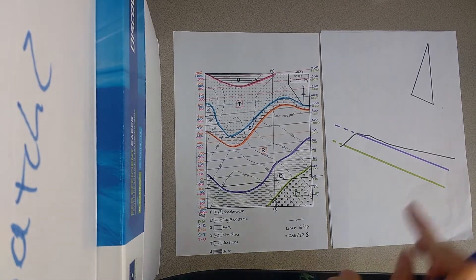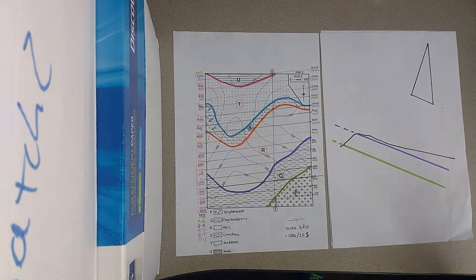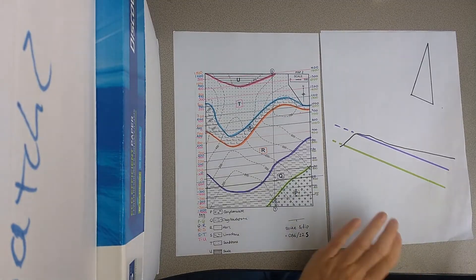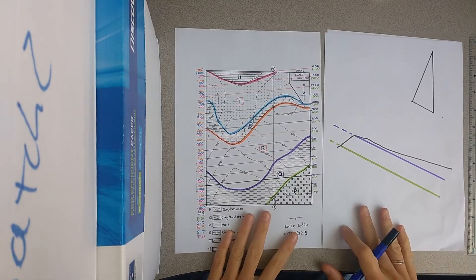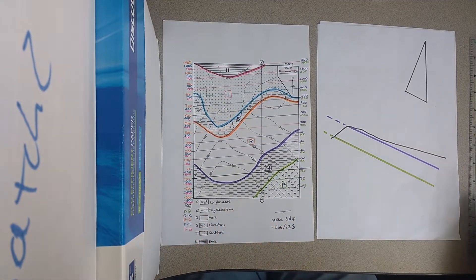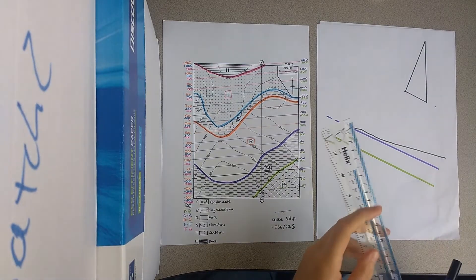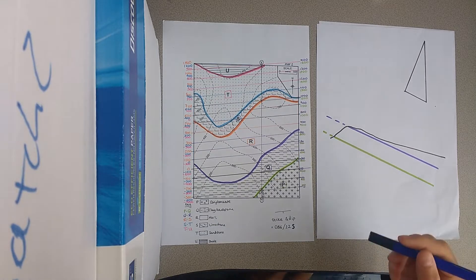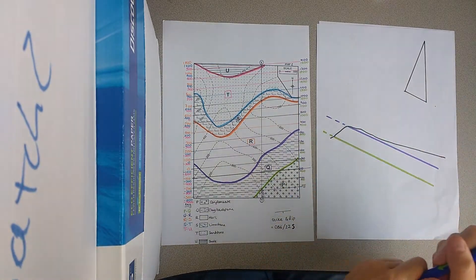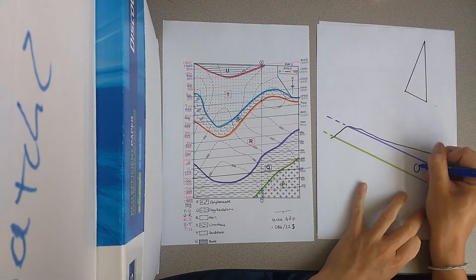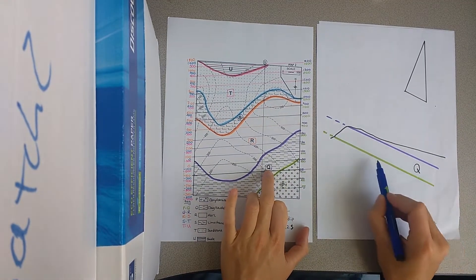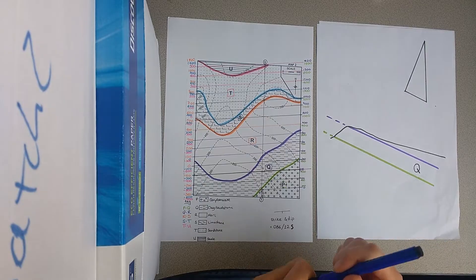Sorry again for the poor quality of this video, but I'm going to now go through looking at true versus vertical thickness. We've now worked out the dip of these beds — the purple and the green beds — which are the surfaces bounding unit Q. So Q, this is the upper and lower surface of this bed Q.